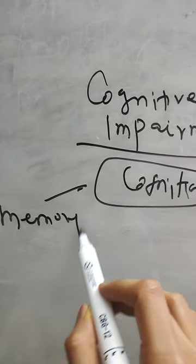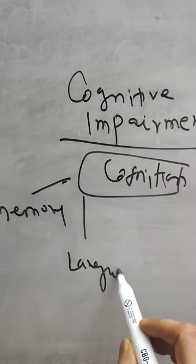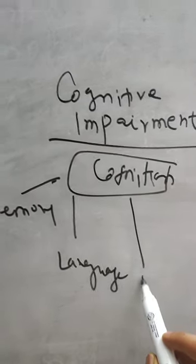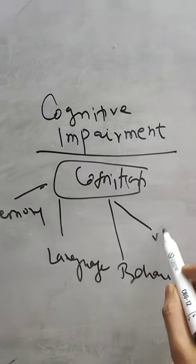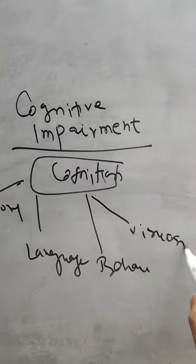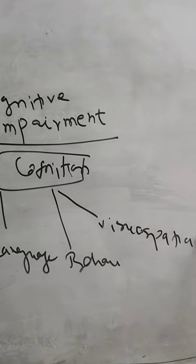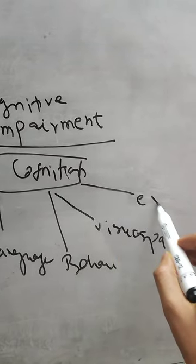The domains are memory, language, behavior, visual spatial ability, and executive function.